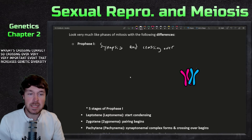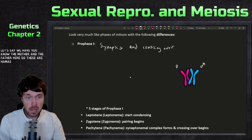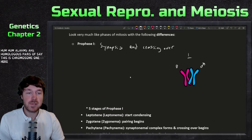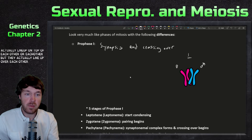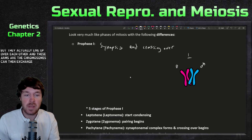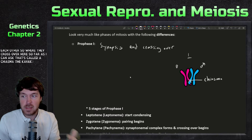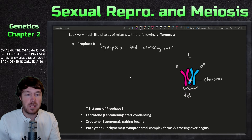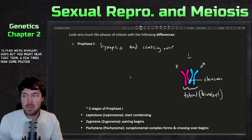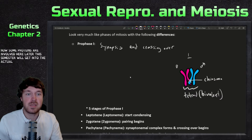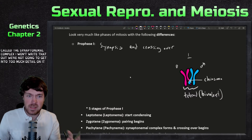The coolest stage of meiosis one is prophase one — this is where we have synapsis and crossing over. Crossing over is a very important event that increases genetic diversity in offspring. Here, homologs — let's say chromosome one from the mother and father — actually line up on top of each other, and the chromosome arms can exchange with each other. Where they cross over forms an X shape called the chiasma, which is the location of crossing over. When they all line up, that's called a tetrad or bivalent. The proteins involved are called the synaptonemal complex.